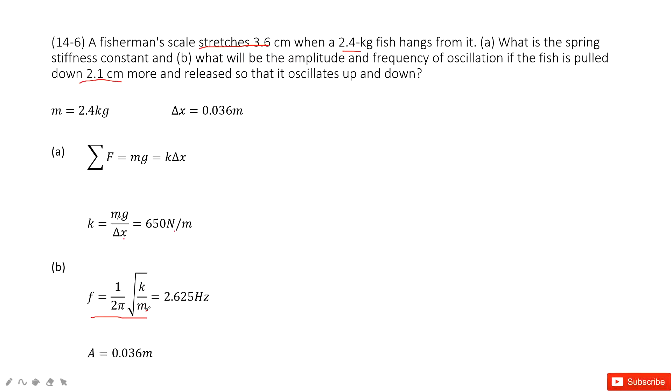Now, did the mass change? No. Did k change? No. So the frequency will not change. That means we write k over m, and since mass is given, we can get the frequency. And the amplitude is 2.1 cm.